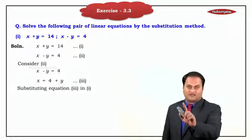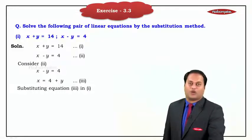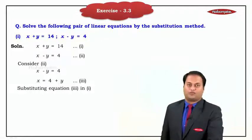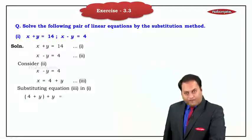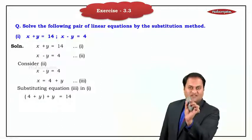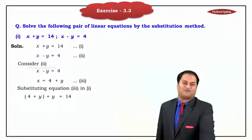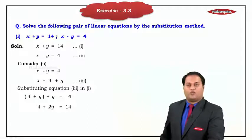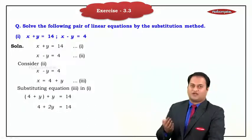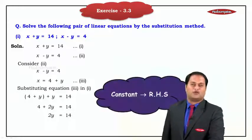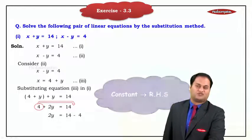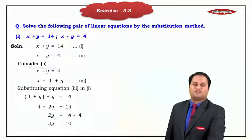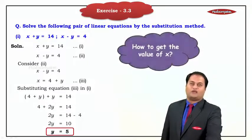Let us substitute. x is equal to 4 plus y in equation 1. In the place of x we substitute 4 plus y, giving us: 4 plus y plus y is equal to 14. Opening the brackets: 4 plus 2y is equal to 14. Moving constants to the right-hand side: 2y is equal to 14 minus 4, which gives 2y is equal to 10, so y is equal to 5.